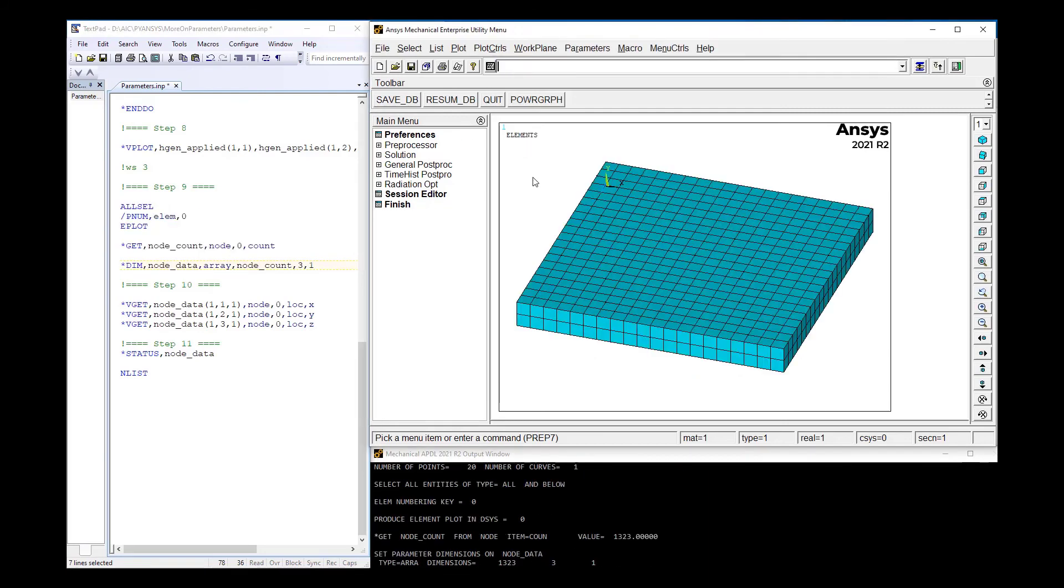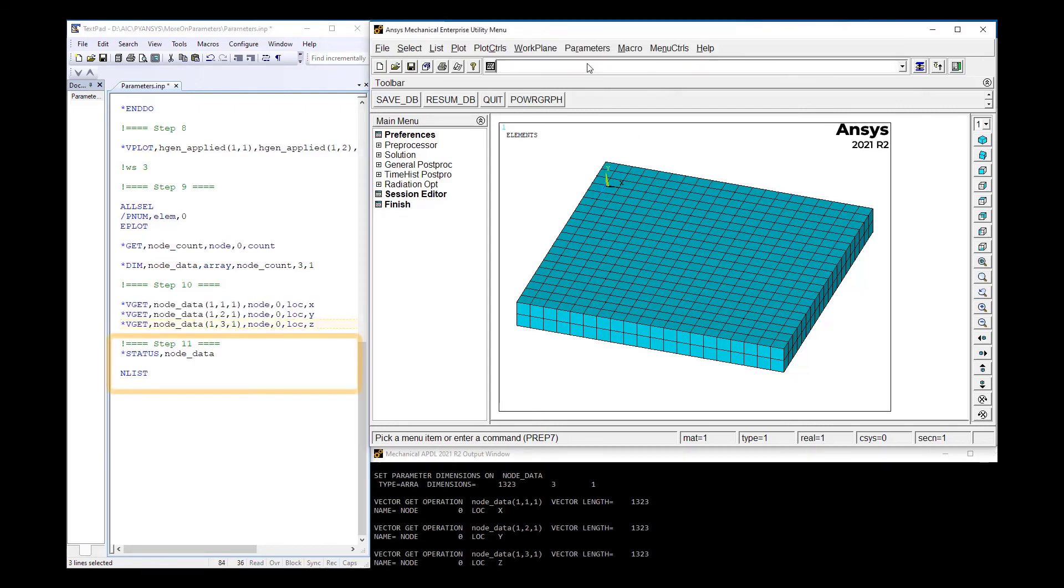The *VGET command is issued to gather the node locations. By default, the *VGET command loops over the node ID field of the command, which is the zero after the word NODE. The starting array location is given to store the data for each *VGET, so the first *VGET is getting the X location to the first column starting with the first row.